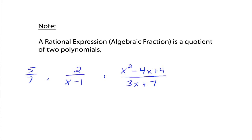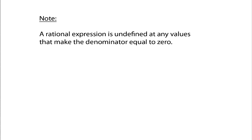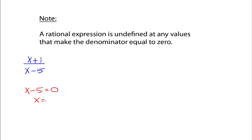A rational expression is undefined at any values that make the denominator equal to 0, because a fraction where the denominator is 0 is undefined. So what about x plus 1 over x minus 5? What values for x would make this rational expression undefined? The way I recommend you do that is you're only worried about the denominator. Take the denominator, x minus 5, set that equal to 0, and solve for x.